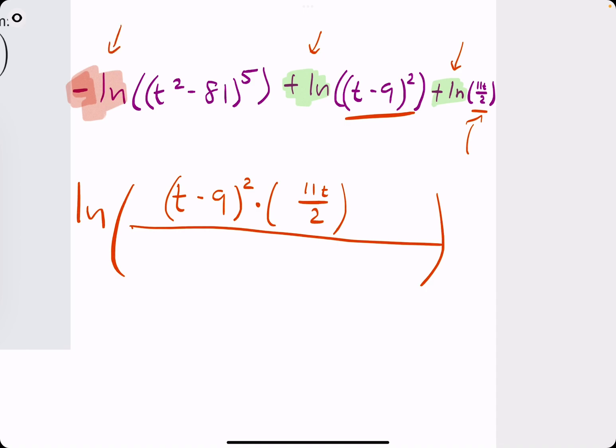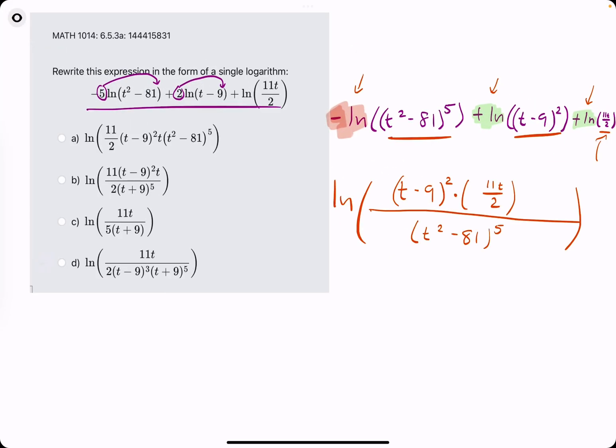And then these two terms are basically multiplied in the numerator there. Then, whichever ln has the negative, the first term, we will throw its insides into the denominator of the natural log. So we have successfully written all of these into a single logarithm like they asked us to.